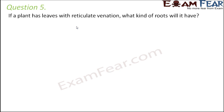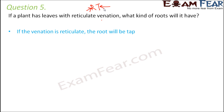If a plant has leaves with reticulate venation, what kind of roots will it have? As we discussed, reticulate venation will always have tap roots. Since the leaves have reticulate venation, the root would be a tap root system — where we have one main root and branches coming out from that main root.